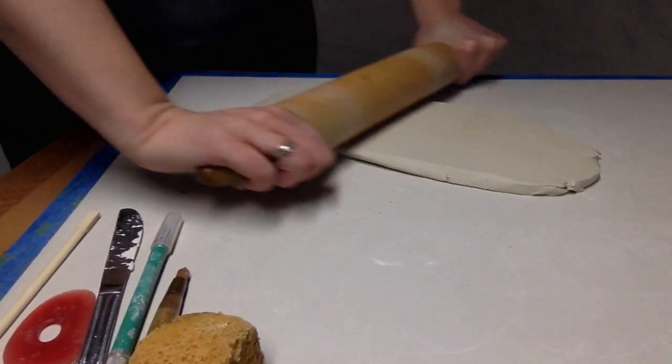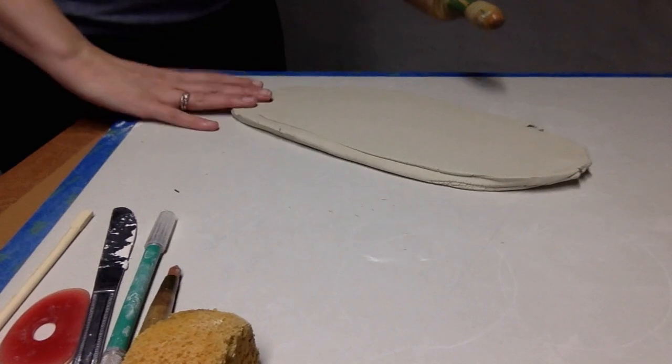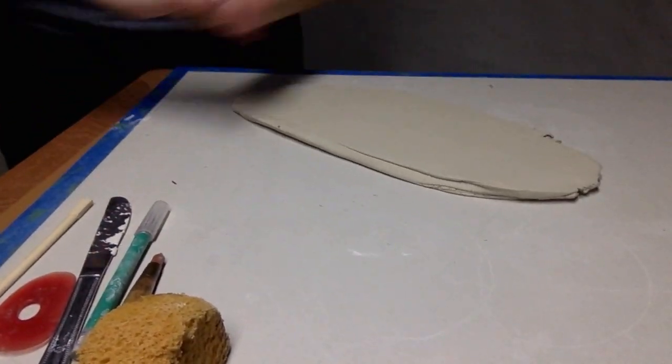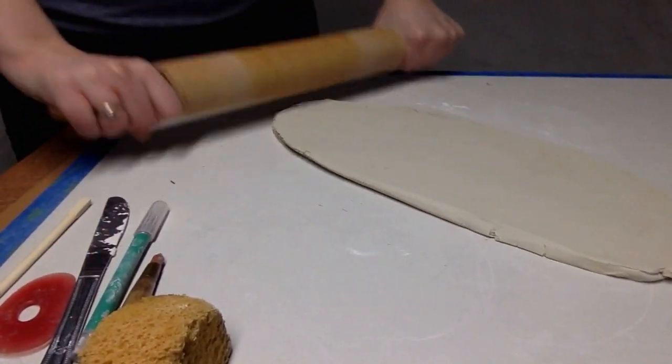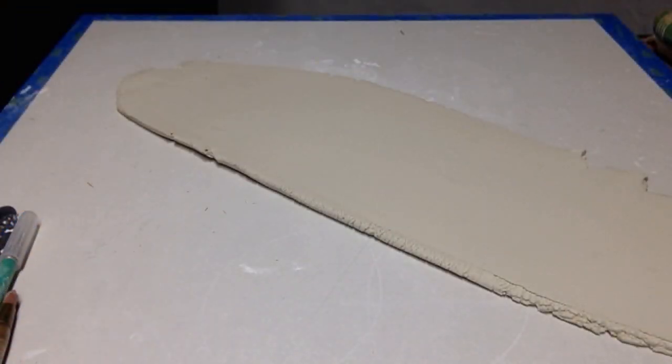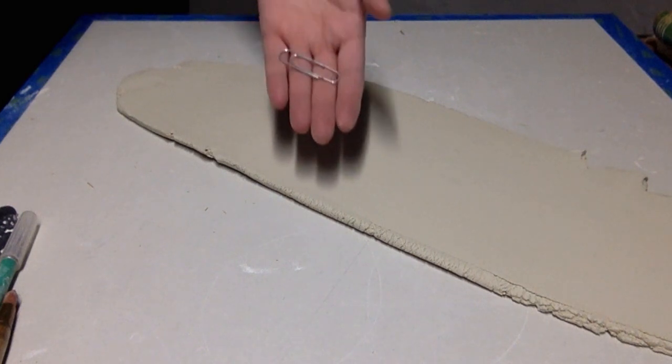I just roll out a pretty thin slab. You don't want it to be more than a quarter of an inch thick to make the walls and bottom of the planter. It takes a few minutes to roll it out and just keep measuring the thickness as you roll.